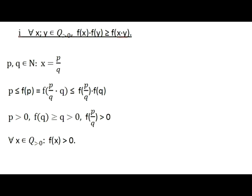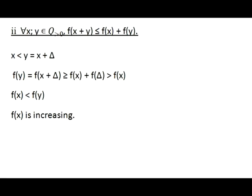We apply condition 1 to F of (P/Q times Q), where P over Q is any given positive rational number. It follows that F of P is not greater than F of P/Q times F of Q. Since both P and Q are positive integers, we can conclude that F of P/Q is positive. Therefore for any rational number X, F of X is positive. From condition 2 it also immediately follows that F is monotonically increasing: if X is less than Y, then F of X is less than F of Y, since for any positive rational delta, F of delta is positive.